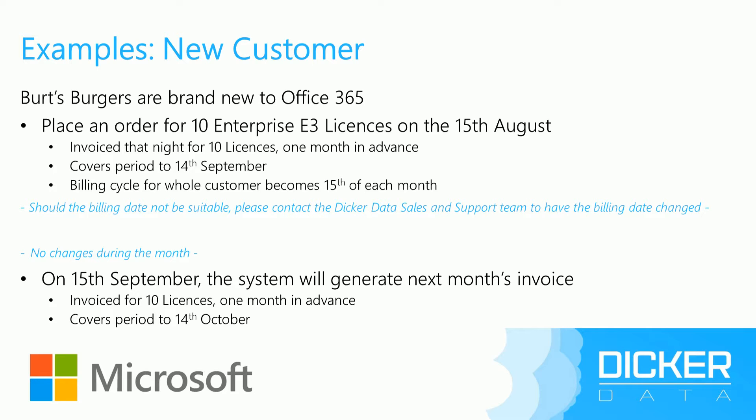No changes are made to Vertsburgers over the first month, and then on the 15th of September, the system will automatically generate next month's invoice — again for 10 licenses one month in advance, covering the period through to the 14th of October.